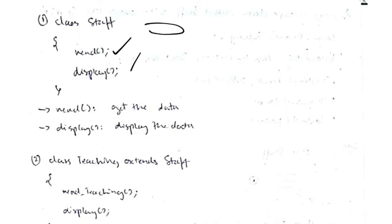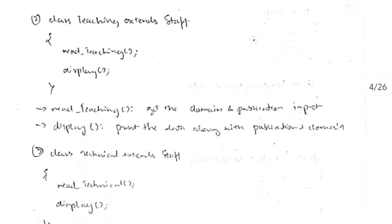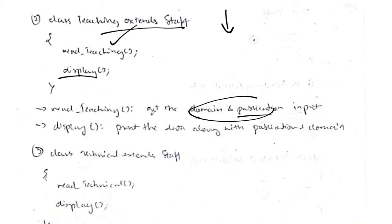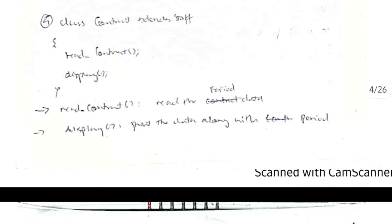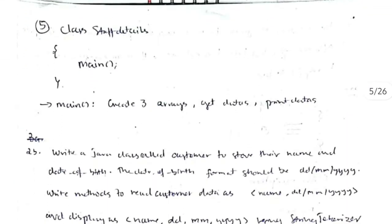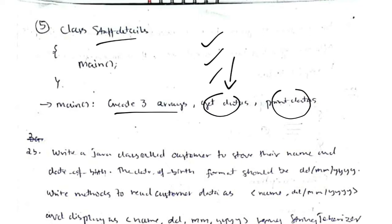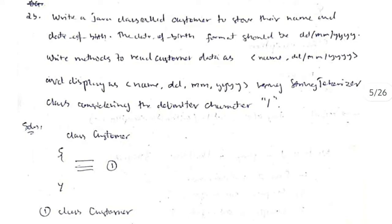In class Staff, we have read and display functions. The same pattern applies when we extend Staff: all fields are inherited, and each subclass adds its own read and display methods. For Teaching it reads domain and publication, for Technical it reads skills, and for Contract it reads period. The main function in StaffDetails creates three arrays for Teaching, Technical, and Contract, and calls the respective read and display functions.